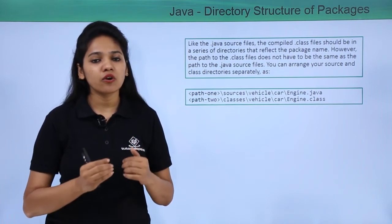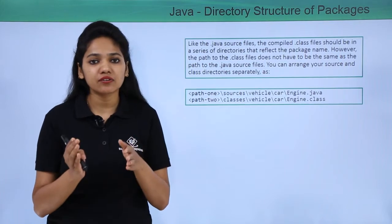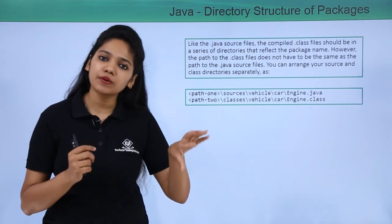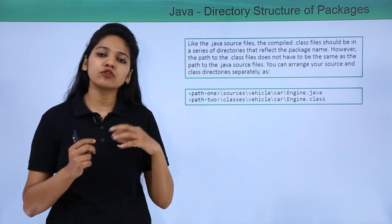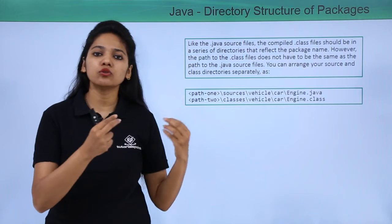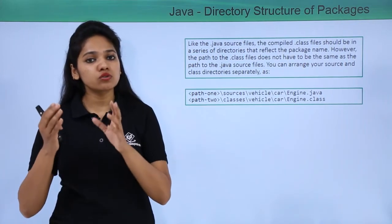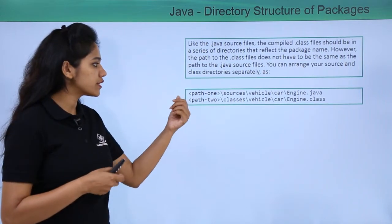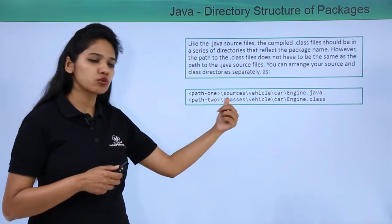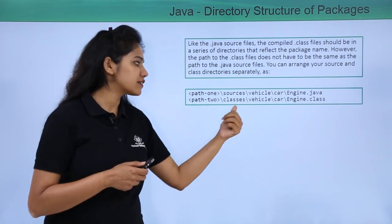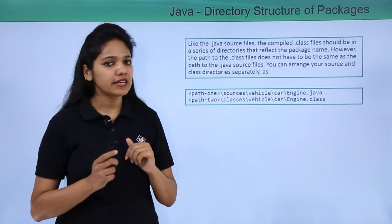In those cases, it is recommended to store these two files in two different directories — the .class files in a separate directory and the .java files in a separate directory. This makes it easier to provide the .class files to other users without them knowing the source code. For example, Engine.java is stored in a 'sources' folder and Engine.class is stored in a 'classes' folder — they are stored in two different directories.